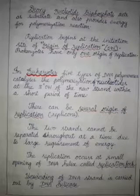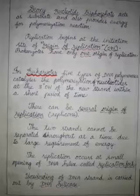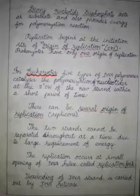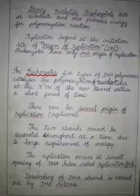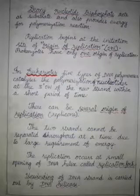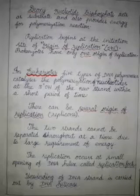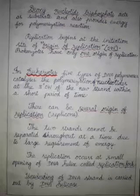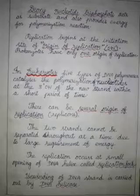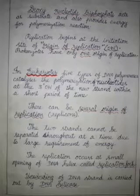In eukaryotes there are several origins of replication. These units of replication are called replicons. Prokaryotes have only one origin of replication whereas eukaryotes have several origins of replication in their two strands of DNA.